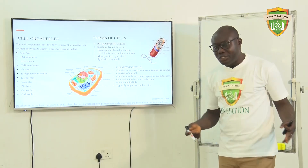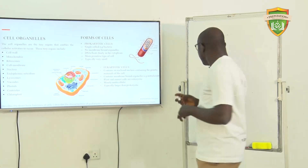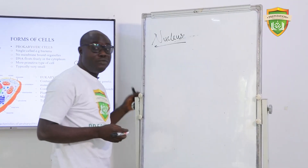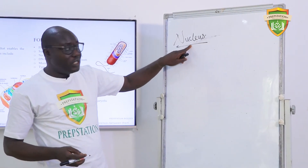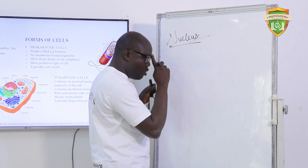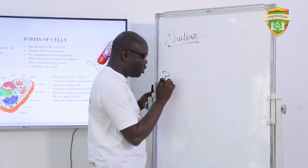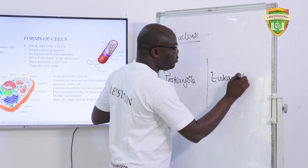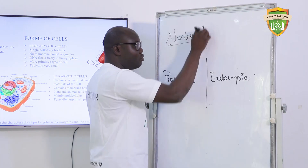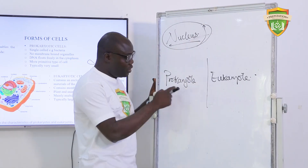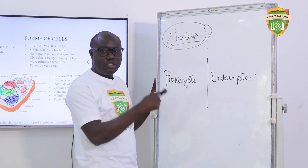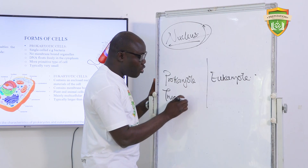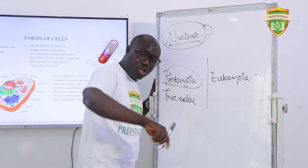We have ribosomes, cell membrane, and nucleus. Almost all cells must have a nucleus. In your early days in biology, you must have been taught about prokaryotes and eukaryotes. A major difference between these two is the presence of a nucleus. A prokaryote is said not to have a true nucleus — not because it doesn't have a nucleus, but because its nucleus is not bounded by a membrane.